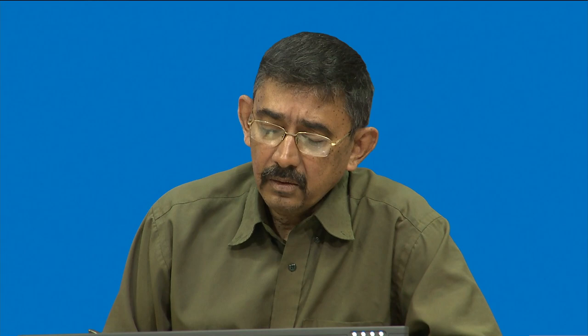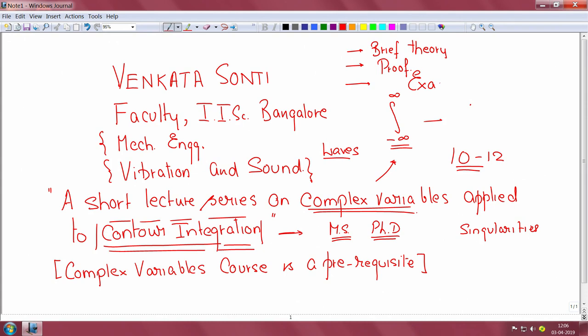The number of lectures is intended to be somewhere between 10 to 12, so I will not have so much time to get into the depth of the material. We will be looking at a brief theory — to keep continuity, I will start with brief theory of complex variables. I will sketchily give some proofs of important theorems which we need, and then proceed to give examples, maybe about 8 or so, on contour integration with some increasing order of difficulty.